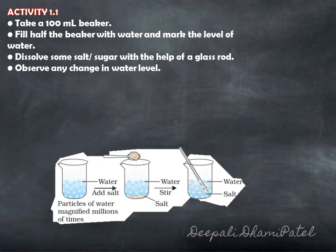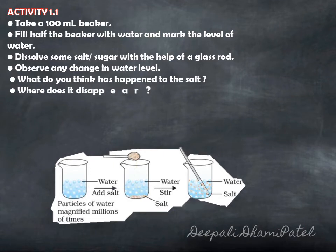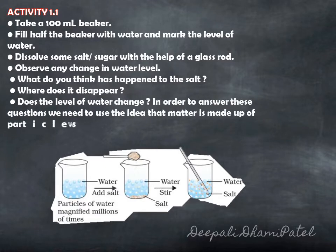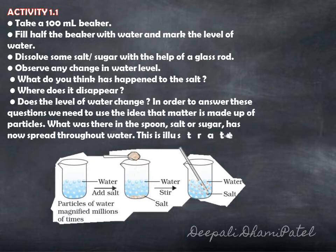Observe any change in the level of water. What do you think has happened to the salt? Where does it disappear? Does the level of water change? In order to answer all these questions, you need to understand that the salt or sugar which was present in the spoon has spread throughout the water. This shows that matter is like a particle and not like a log of wood. If it was like a log of wood, it would not mix or dissolve with water. But it got dissolved and mixed up, disappeared from water. Where did it go?